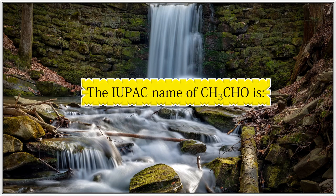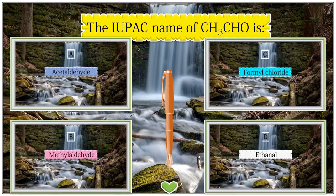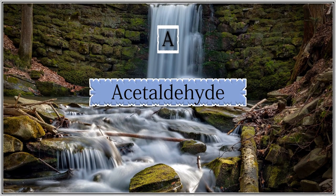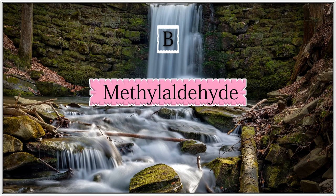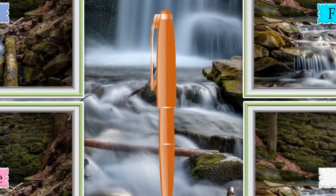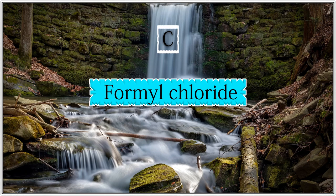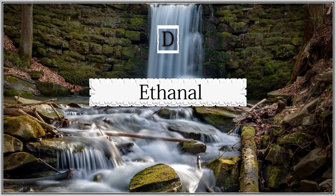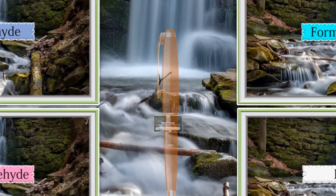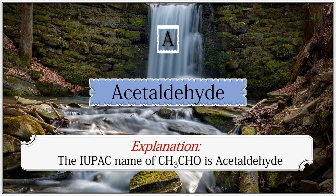The IUPAC name of CH3CHO is: (A) Acetaldehyde, (B) Methyl aldehyde, (C) Formyl chloride. The answer is Acetaldehyde. The IUPAC name of CH3CHO is Acetaldehyde.